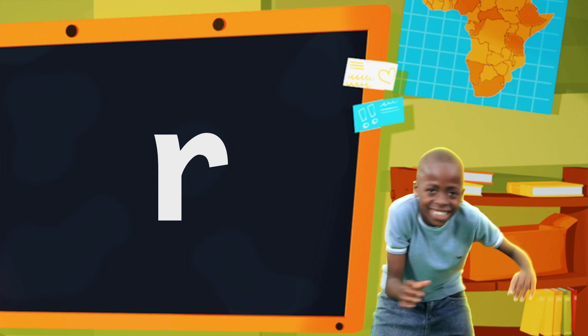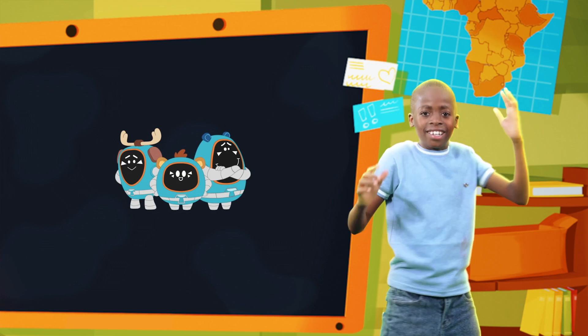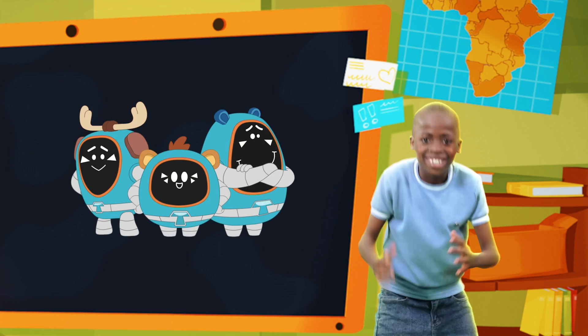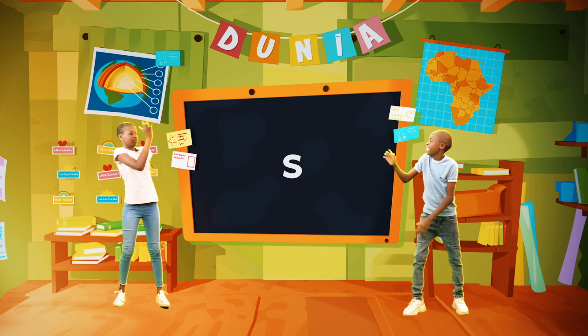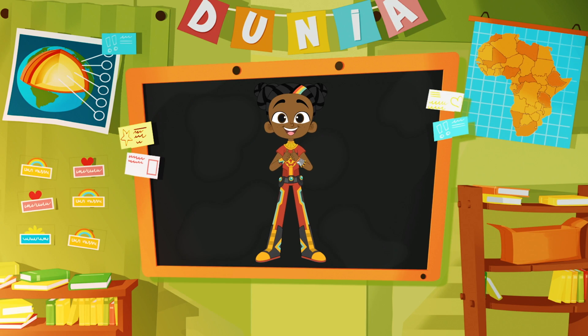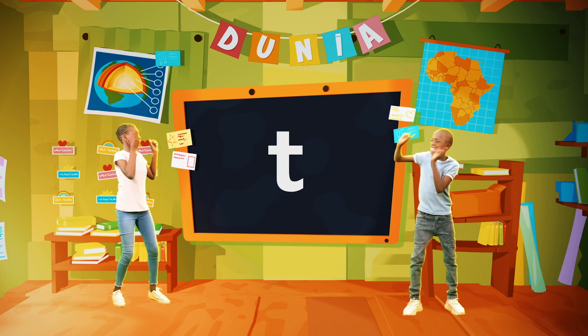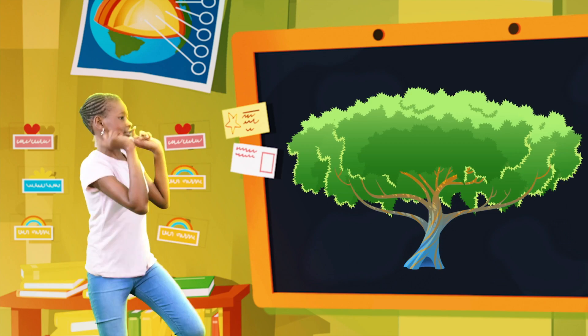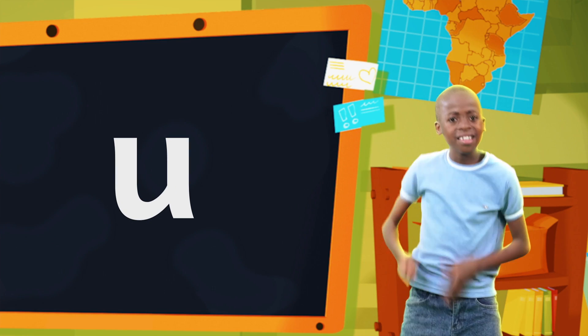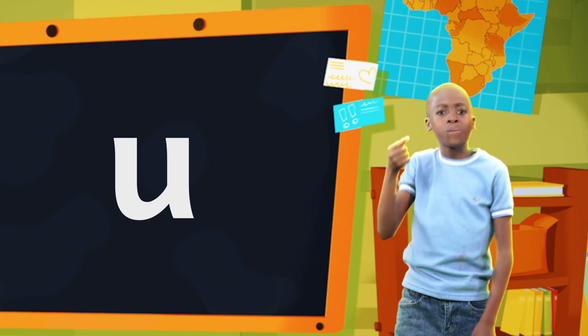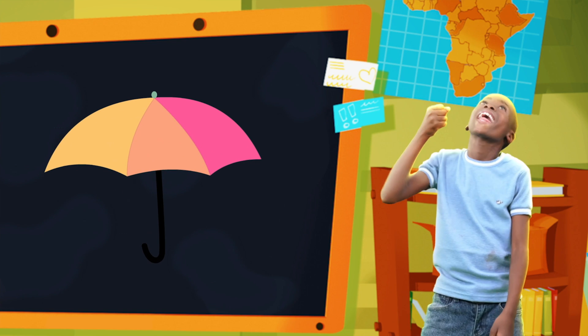R is for robot. R, R, robot. And S is for semi. T is for tree. T, T, tree. U is for umbrella.